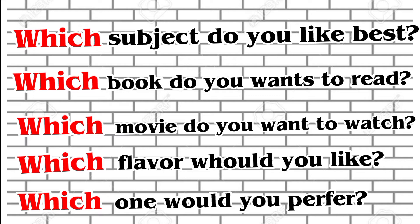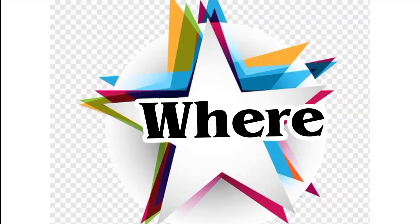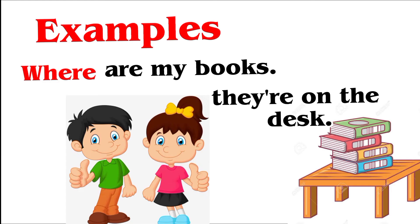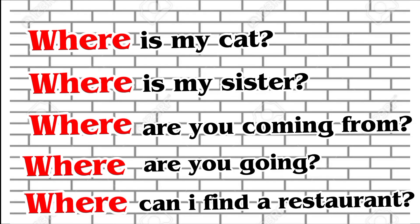Which movie do you want to watch? Which flavor would you like? Which one would you prefer? Next, let's look at 'where.' Where is used to ask about place. Example: Where are my books? They are on the desk. Other examples: Where is my cat? Where is my sister?